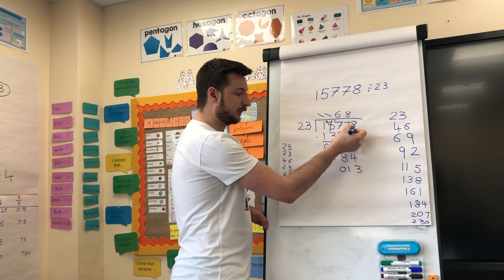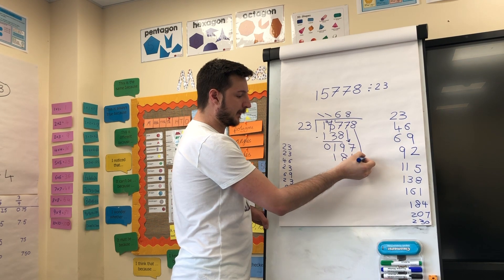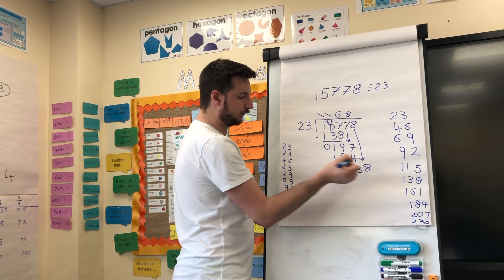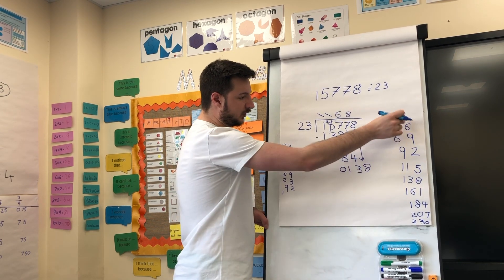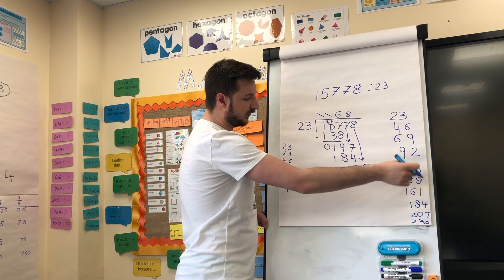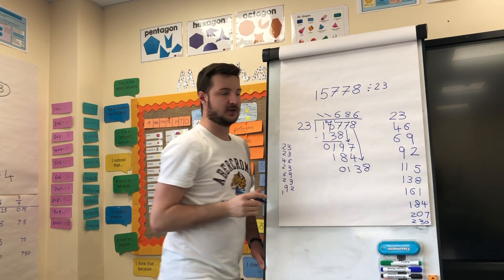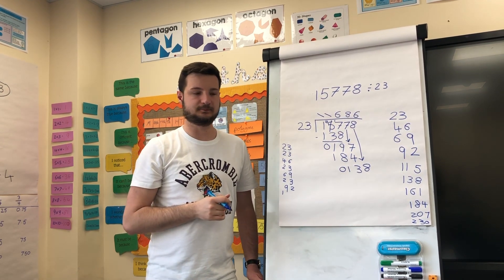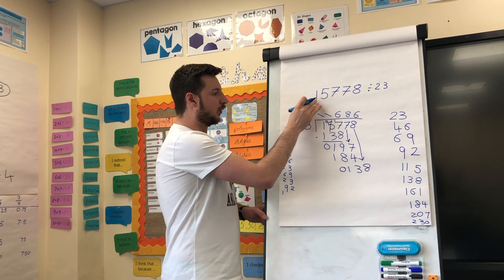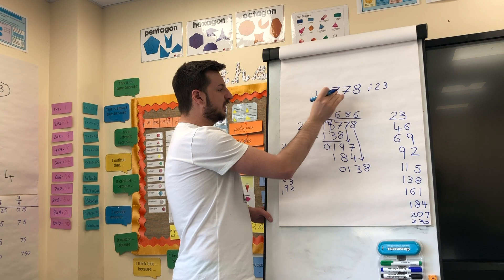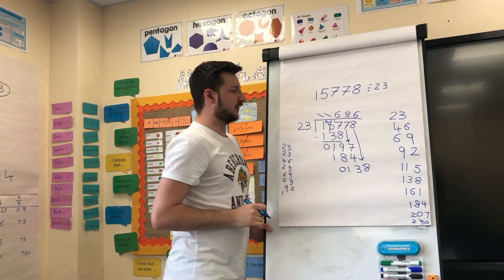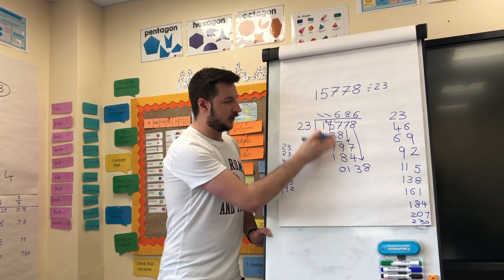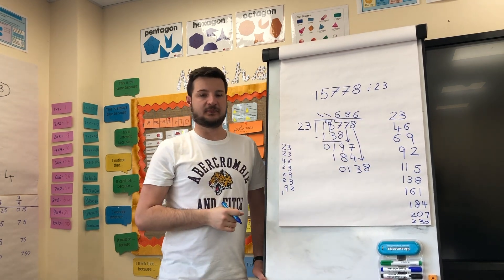Bring it down and repeat. Twenty-three goes into that number six times. Six hundred and eighty-six. Fifteen thousand seven hundred and seventy-eight divided by twenty-three is six hundred and eighty-six.